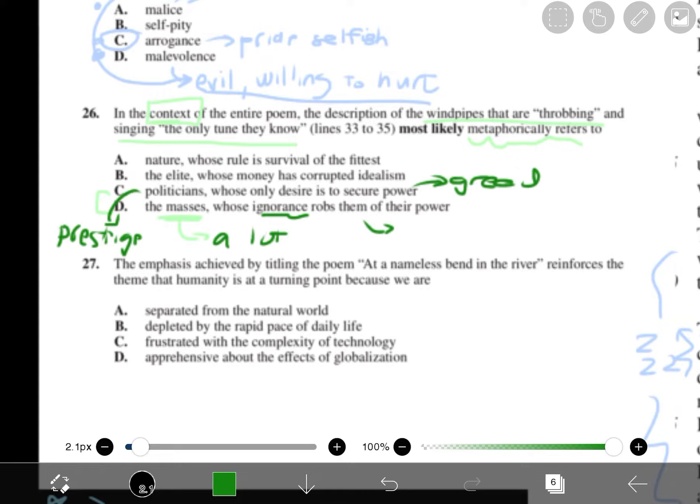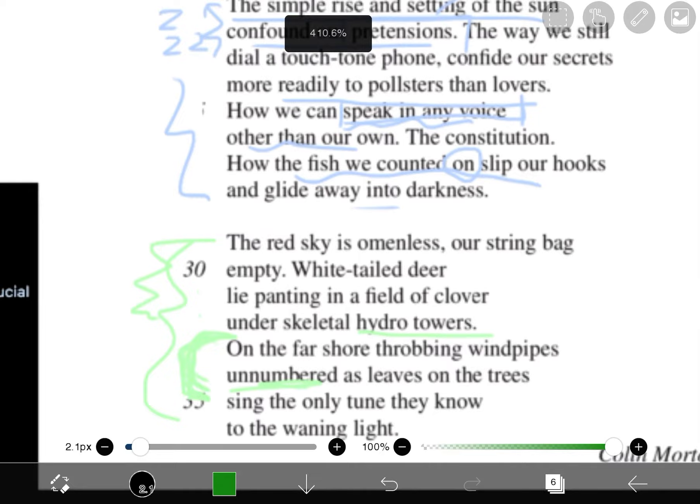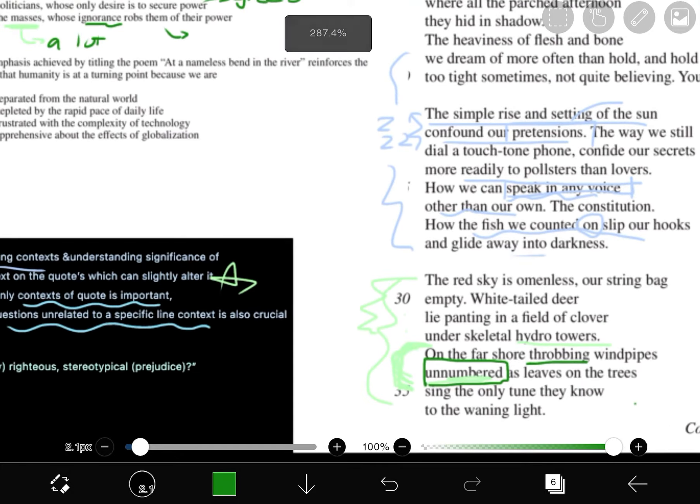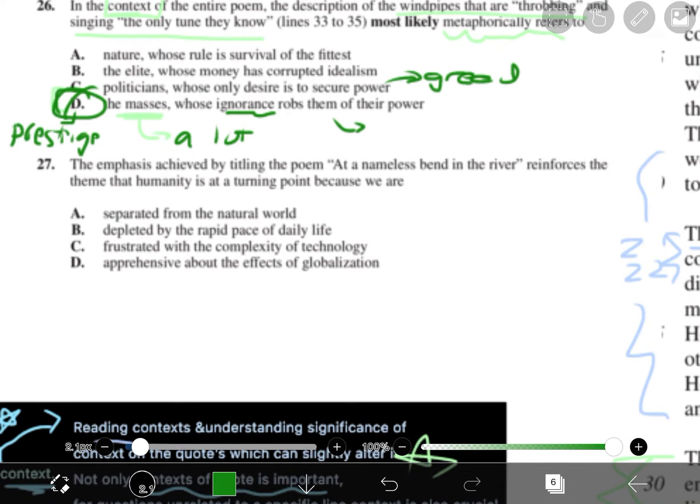So let's see what there is here. If it's C, we will find prestige, hierarchy, and greed. If it's D, we'll find a lot and ignorance. On the far shore throbbing wind pipes, unnumbered as leaves on the tree. There is no hierarchy. There is no greed. Because you got trees, you can't be greedy about leaves, right? But it does say unnumbered. So the closest thing with using the minimal clues that we do have, it's going to be D.